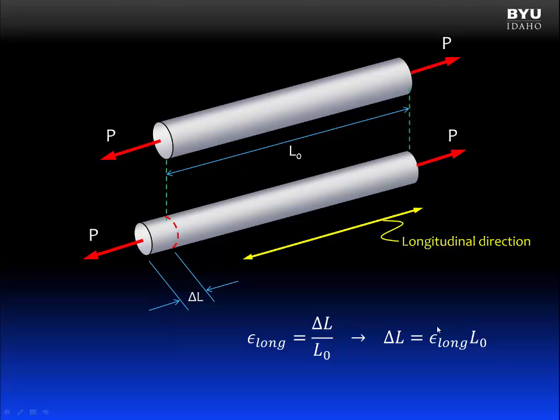Let's review. The longitudinal direction is the direction that is parallel to the force. The direction perpendicular to that is the lateral direction. And this is going to be important to us in our discussion on Poisson's ratio.